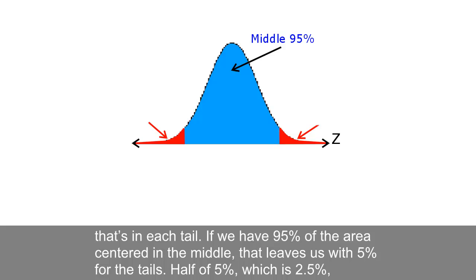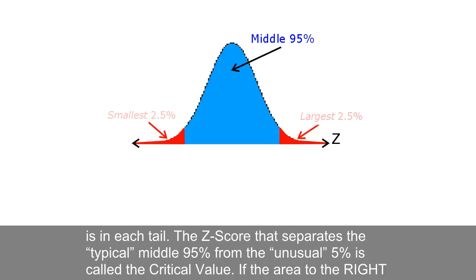that leaves us with 5% for the tails. Half of 5%, which is 2.5%, is in each tail.